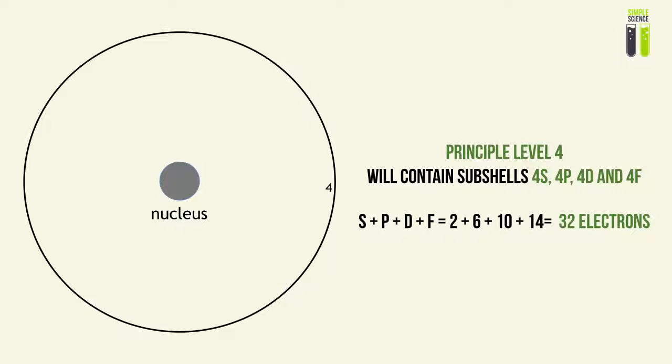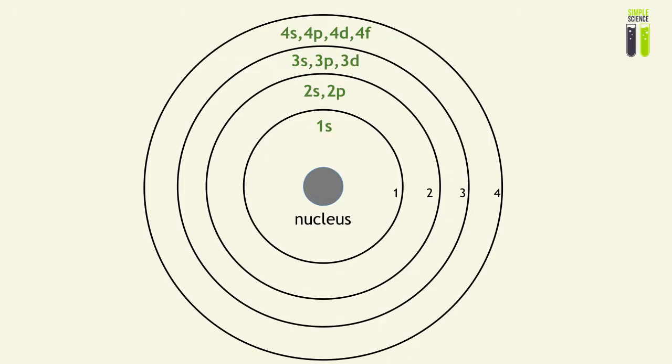The number 4 at the front does not represent the number of subshells — it represents the principal energy level in which those subshells exist. To calculate the total electrons in level 4: S plus P plus D plus F equals 2 plus 6 plus 10 plus 14, giving a total of 32 electrons. Remembering which subshells exist within each energy level is the most important schematic to take away from this video.